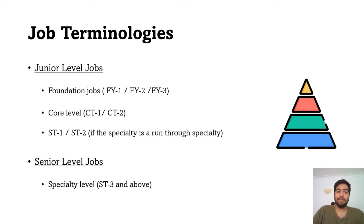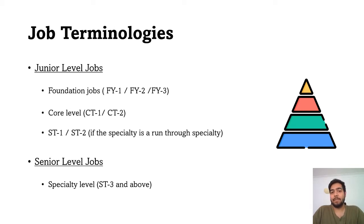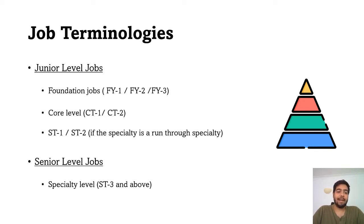The first category is junior level job posts. These can be further classified into foundational level jobs such as F1, F2 and sometimes F3. The second subcategory is core level job posts such as CT1, CT2 and sometimes CT3, and ST1, ST2 if your speciality is a run-through speciality. So these are all junior level job posts.